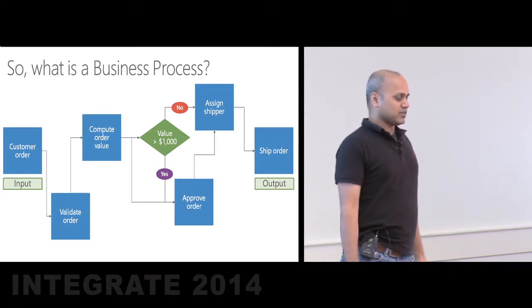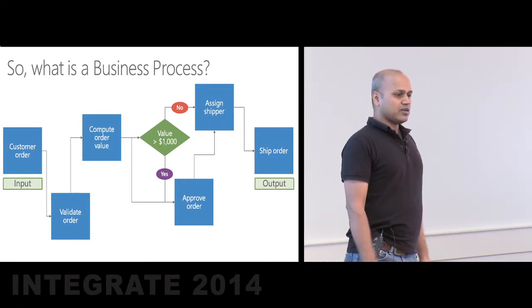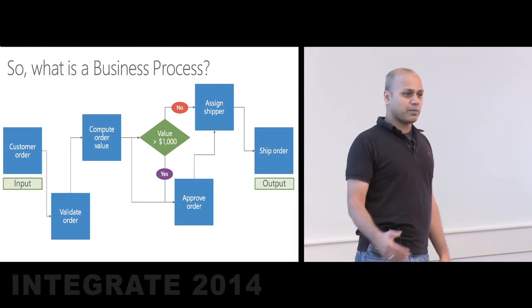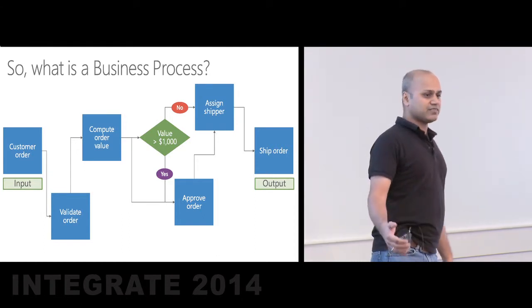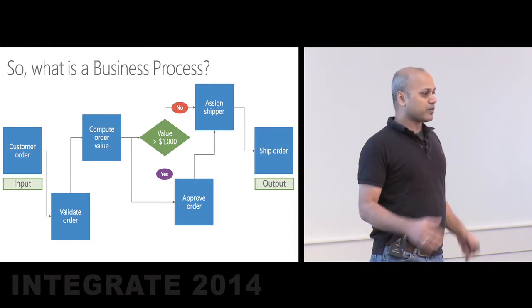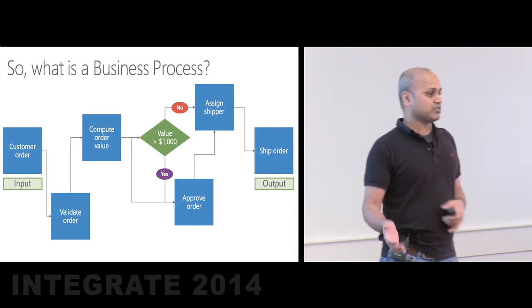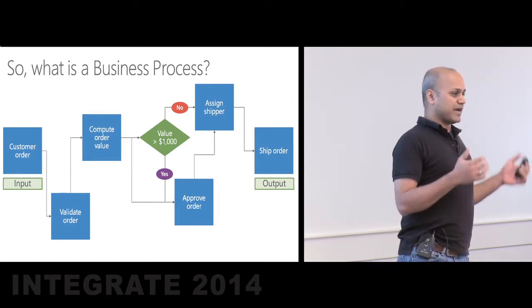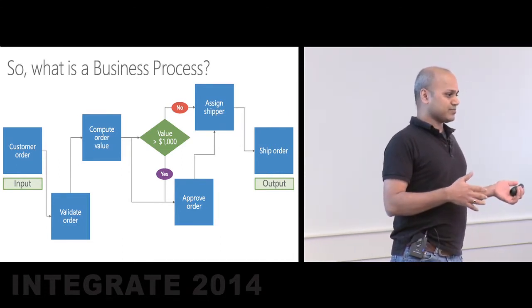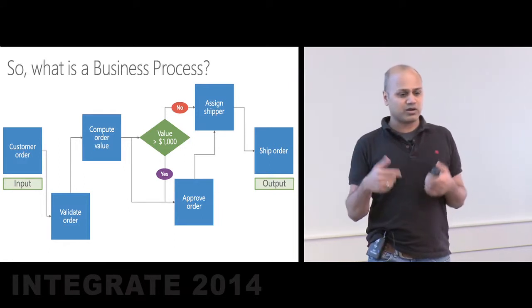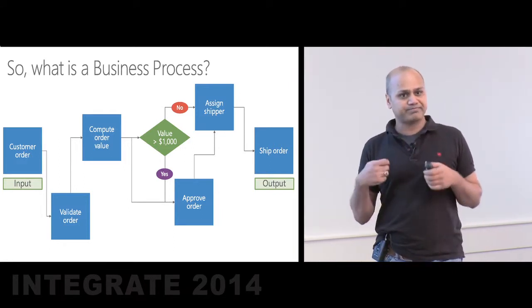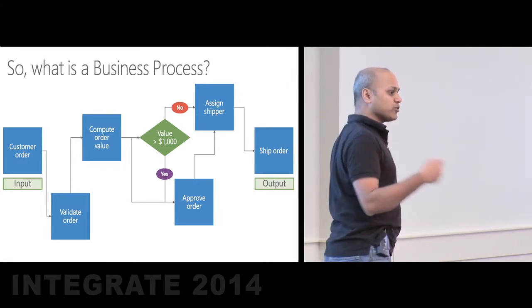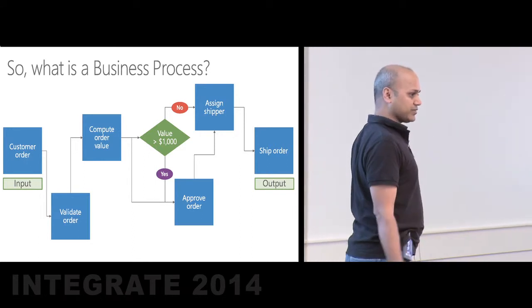A business process could be simple or could be complex, depending on the number of steps it has and the number of systems it needs to talk to. It could be triggered manually, triggered automatically, or poll for data.